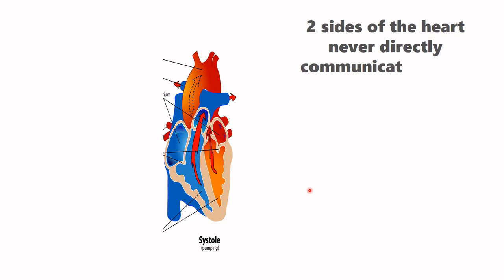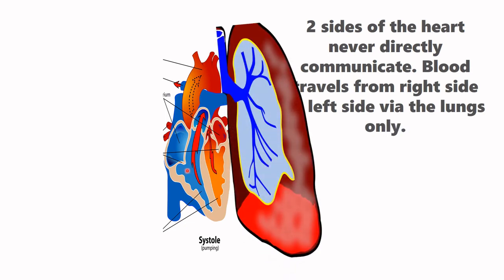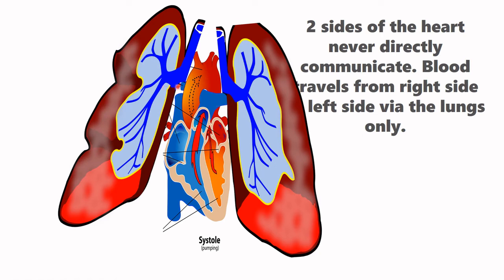So guys, what you should know is that two sides of the heart never directly communicate. Blood travels from right side to the left side via the lungs only. Let's see, when the right ventricle contracts, it will pump out blood into the right lung and into the left lung through the left pulmonary artery and right pulmonary artery. And then blood will come from the lungs into the left ventricle through pulmonary veins. I mean, left pulmonary veins and right pulmonary veins. And this is the way only these two chambers can communicate is through the lungs. Just that is the only way.